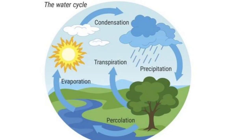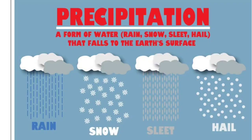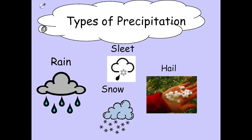After the condensation of water vapour into water droplets, the release of the moisture from the atmosphere is known as precipitation. Or in other words, the falling of the water particles from the atmosphere in any form to the Earth's surface is called precipitation. This precipitation may take place in liquid or in solid form.